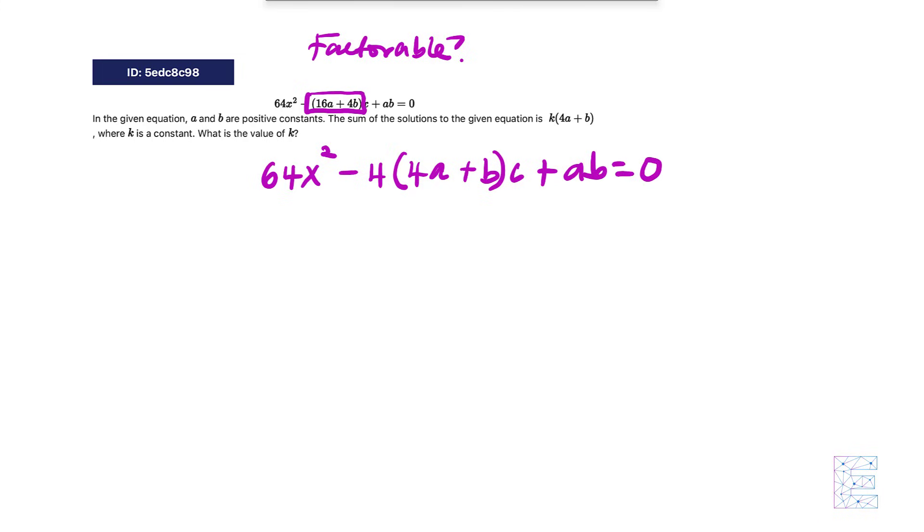Now the rest of this is super simple. Whatever you took out, whatever is here, it's going to always be that number divided by this number. So it's going to be 4 over 64.